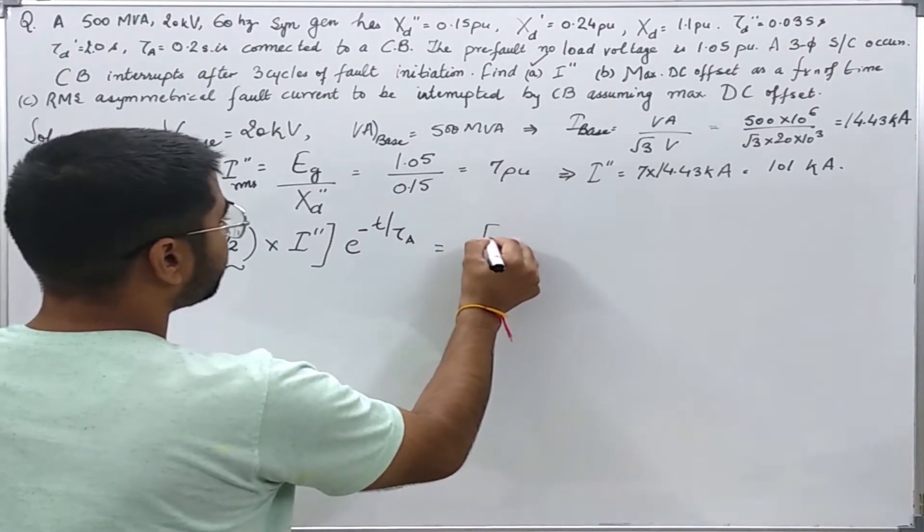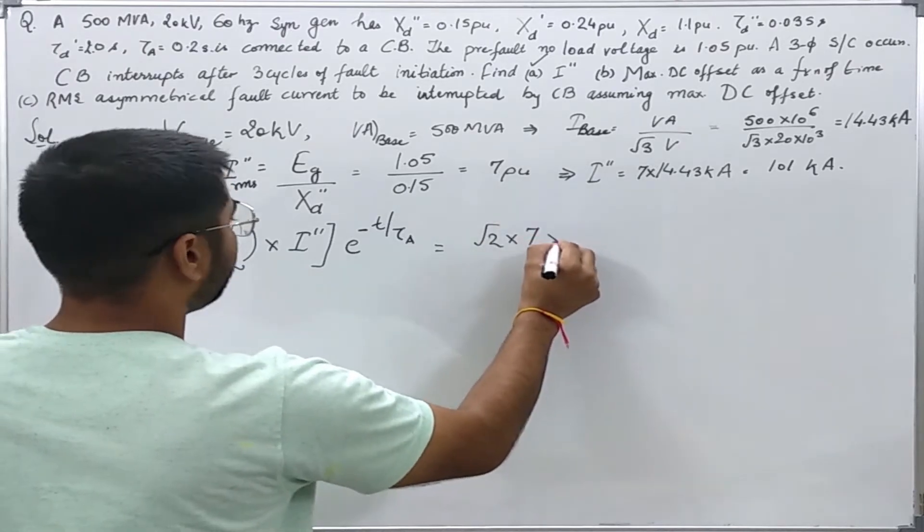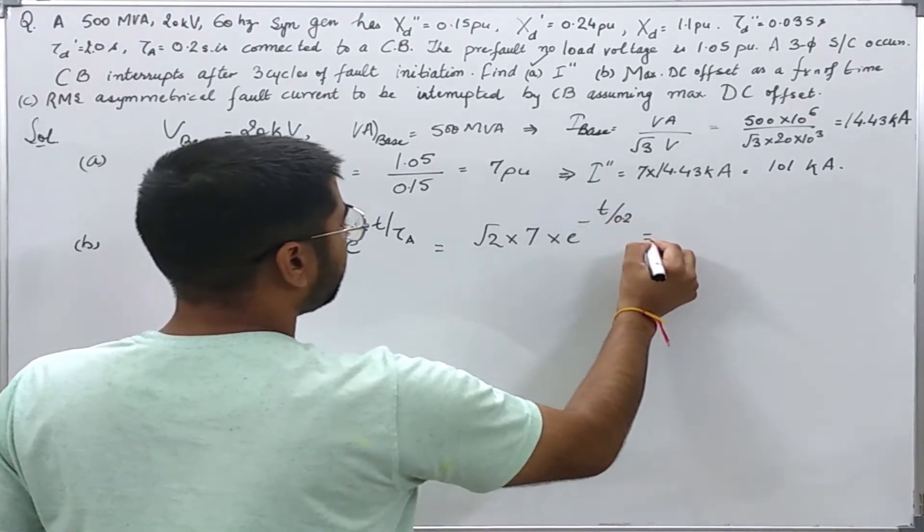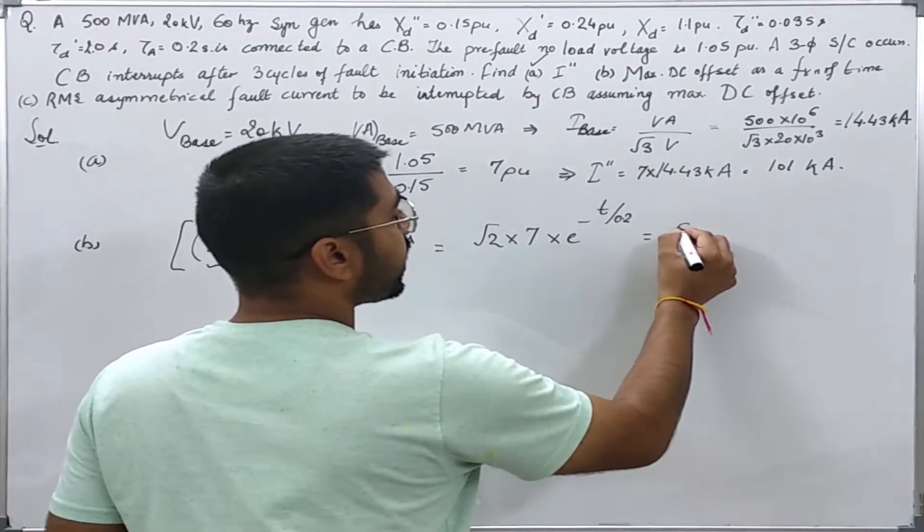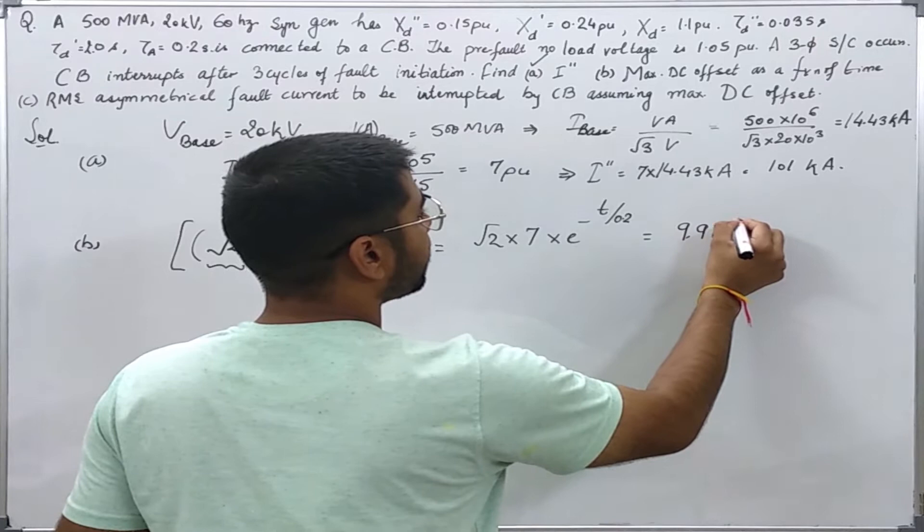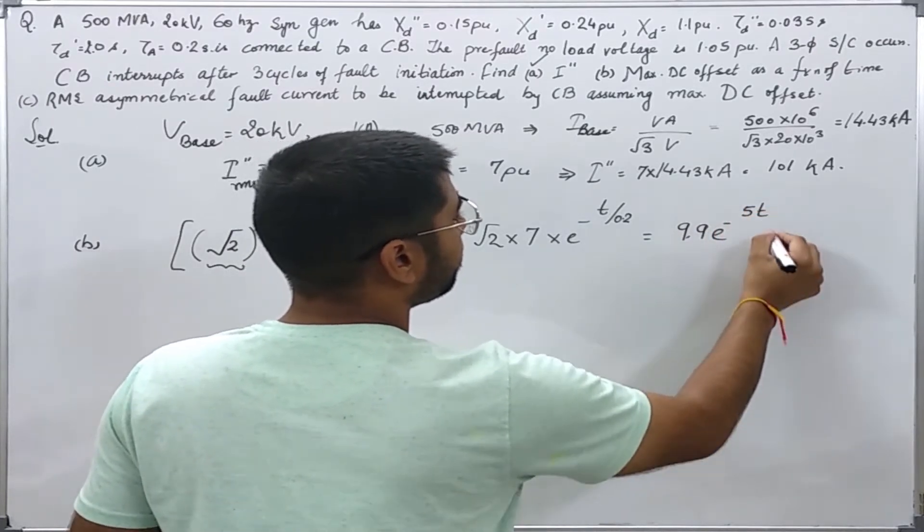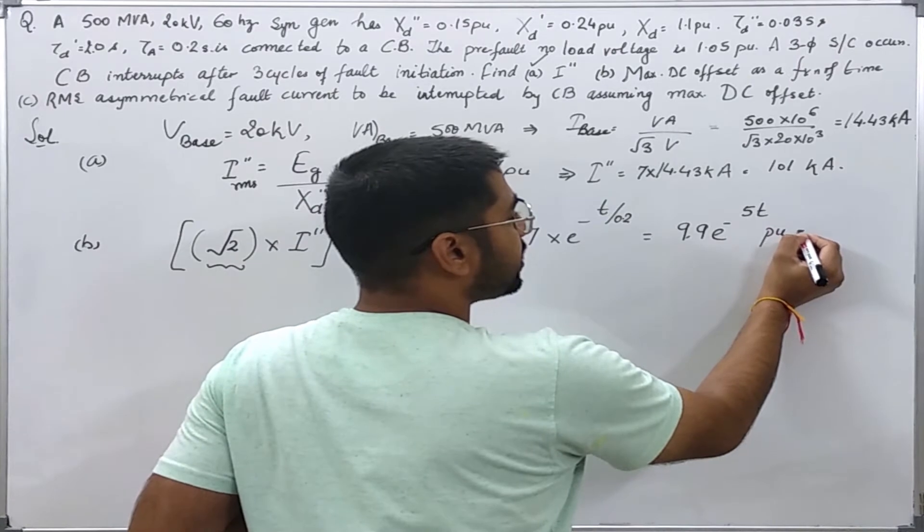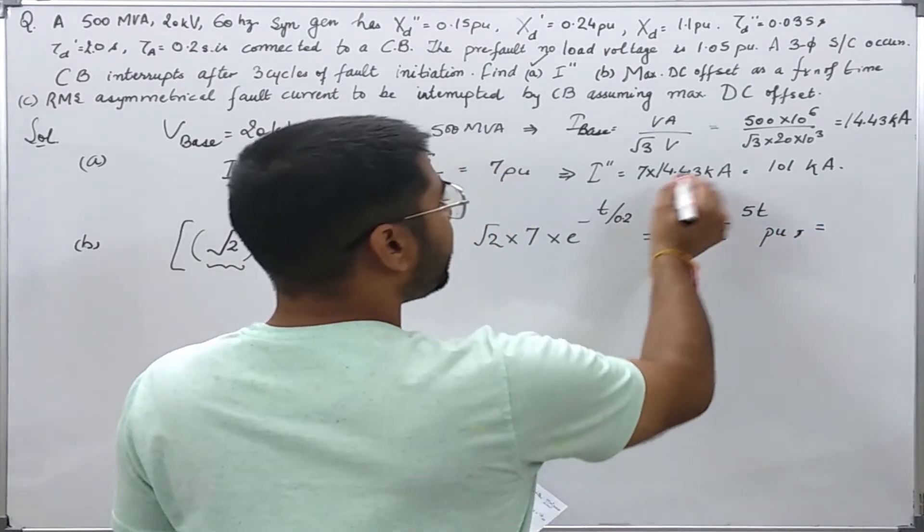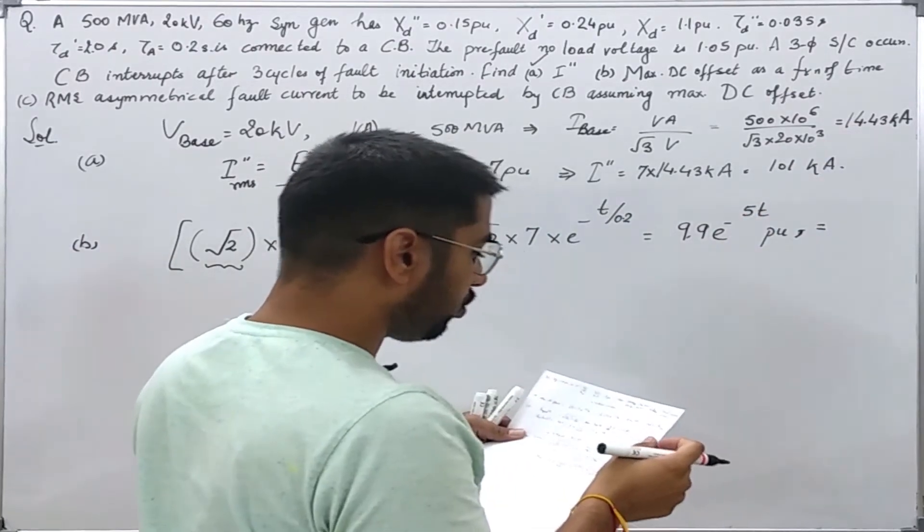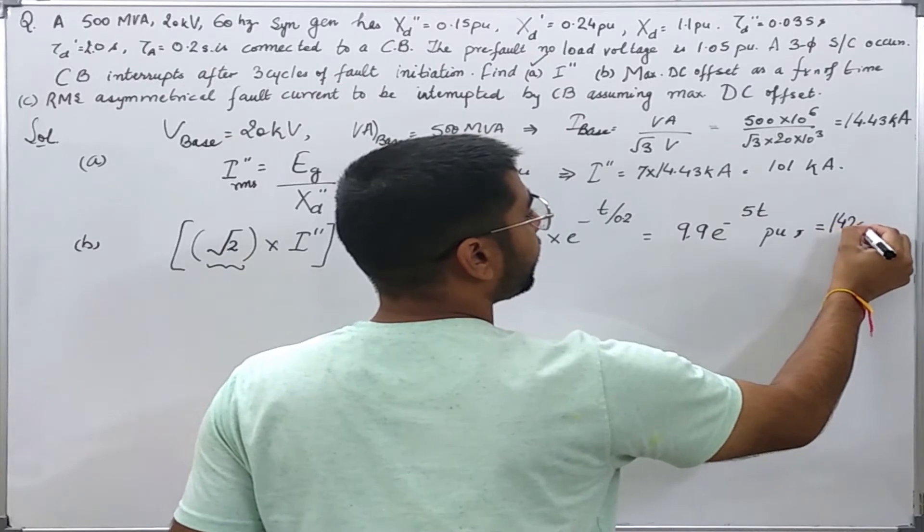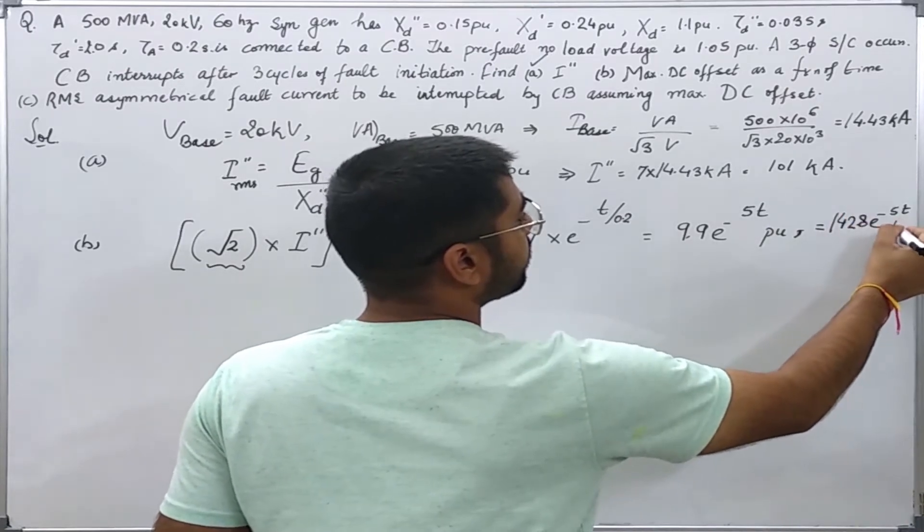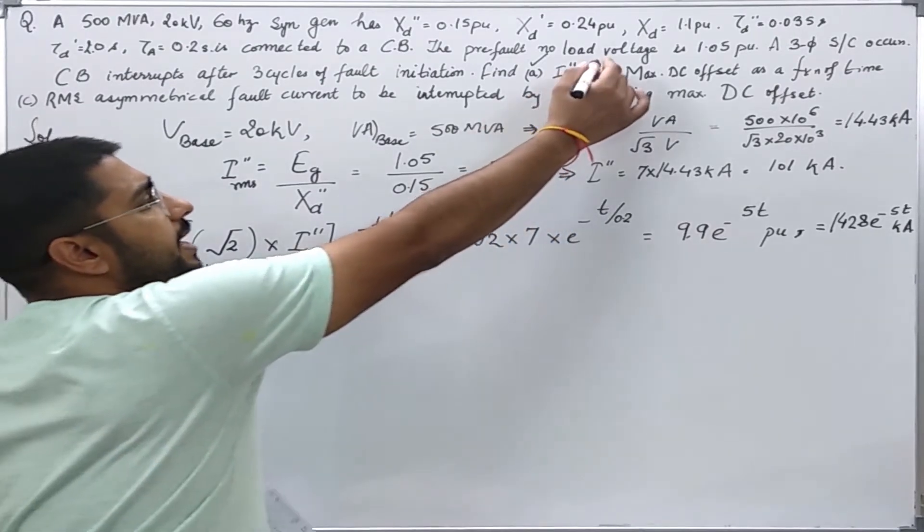So it will come out to be root 2 times 7 per unit into e^(-t/0.2) which is equal to 9.9 e^(-5t) per unit, or if I want to write in kiloamps it is equal to 9.9 into 14.43 which comes out to be 142.8 e^(-5t) kiloamps. So this solves the part B of our question.